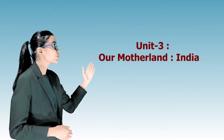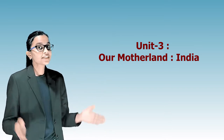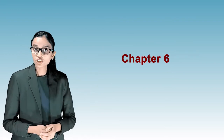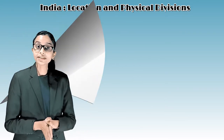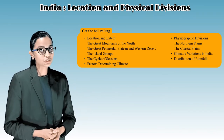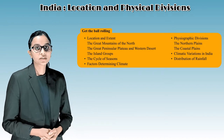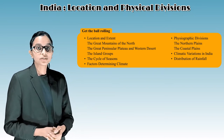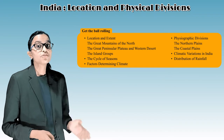Hello students, my name is Priyanka and I am your digital mentor. Today we are starting Unit 3 in geography - our motherland, that is India. This unit starts from Chapter 6, named 'India: Location and Physical Divisions.' Topics include location and extent, the great mountains of the north, the great peninsular plateau and western desert, the island groups, the cycle of seasons, factors determining climate, and physiographic divisions.